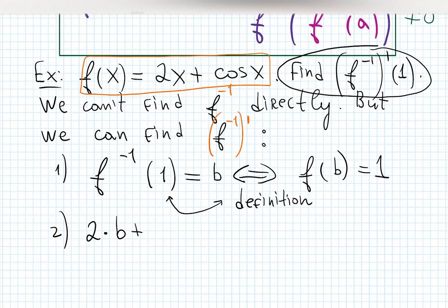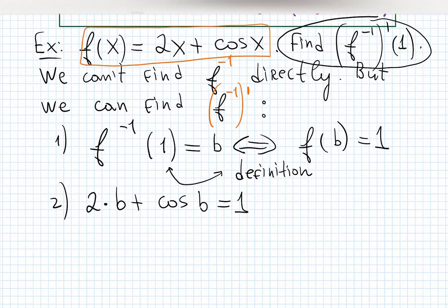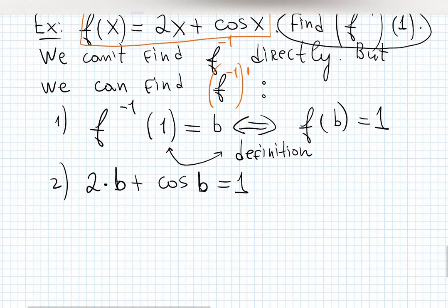2 times b plus cosine b, and we know the result is 1. This is the inverse problem - I know the answer is 1 but I don't know the input. You can call it t or m, whatever you like. 2b + cos(b) = 1. You need to solve this somehow.